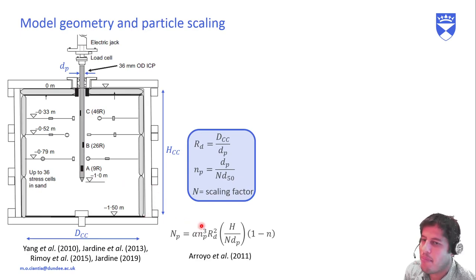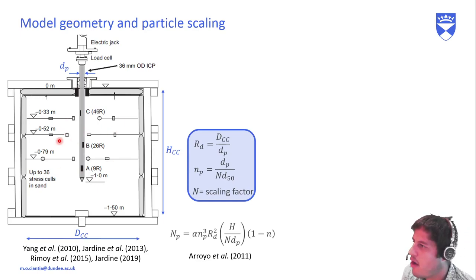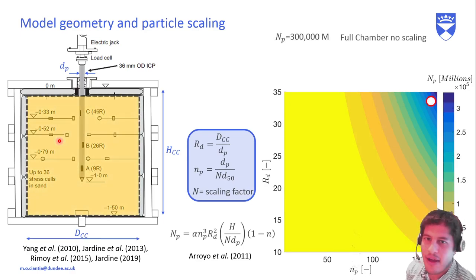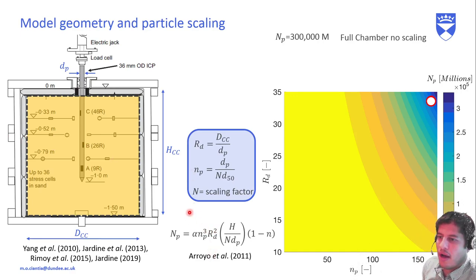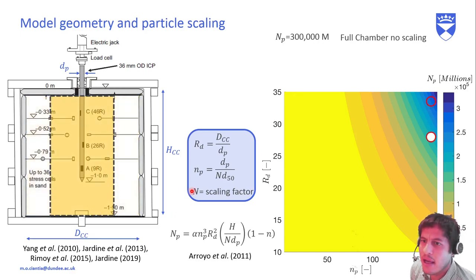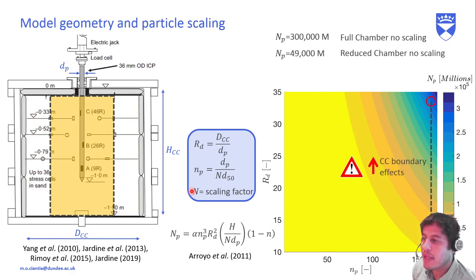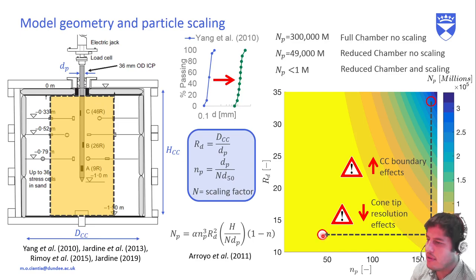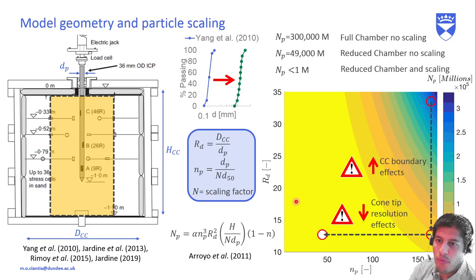You can estimate the number of particles in a chamber. Given a target porosity and geometrical dimensions with spheres, you can estimate how many spheres will fit. Without any scaling at all, you would need around 300,000 million spheres to fill this calibration chamber — this is impossible for DEM. One approach is to reduce the chamber diameter, but this increases boundary effects. Another is to increase the particle scaling, giving a larger sand, but this decreases cone tip resolution. It's a battle between high resolution and a realistic number of particles.